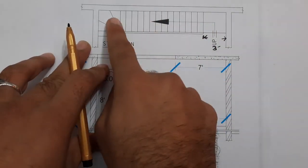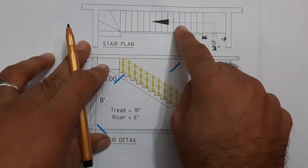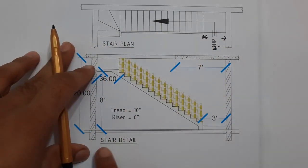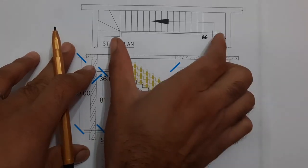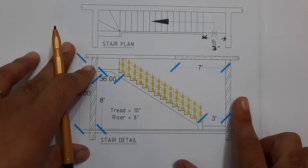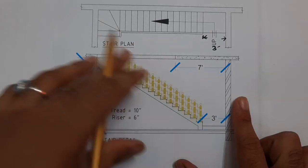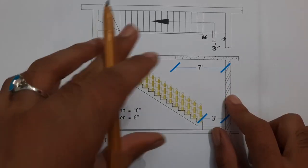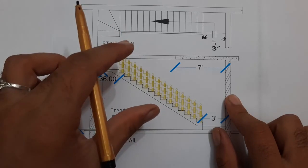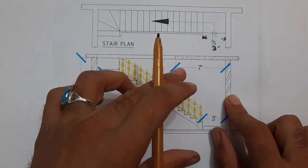The next one is stair details - this is the cross section of this plan. So this is the topic for today. If this topic is helpful for you, you may like this video and subscribe this channel with bell icon pressed. If I upload any video to this channel, you will get notification first.